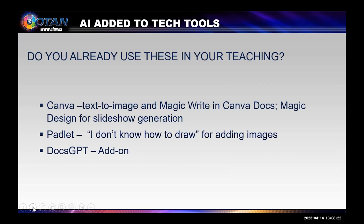Some popular tools you may be using already now have AI built in. If you use Canva and Padlet, for example, there are now AI tools that are integrated. Canva now has text-to-image that will create images you are looking for. Enter a description, and instead of morphing existing images, the text-to-image tool in Canva creates new images. This is available in all Canva accounts. MagicWrite is an AI text generator in Canva that helps you with a first draft for any type of text based on your prompt. It's available in Canva docs, Canva-free, pro-teams, and non-profits accounts, but not currently available in Canva for education.